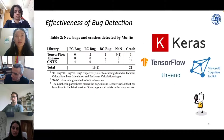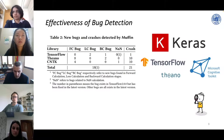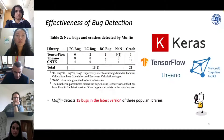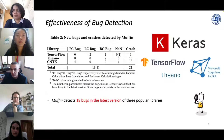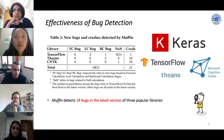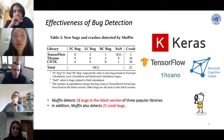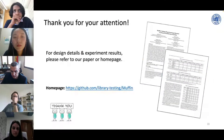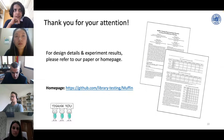In evaluation, Muffin detects 18 bugs in the latest versions of three popular DL libraries: TensorFlow, Theano, and CNTK. In addition, Muffin also detects 21 crash bugs in these libraries. For more details and experimental results, please refer to our paper and the GitHub homepage.